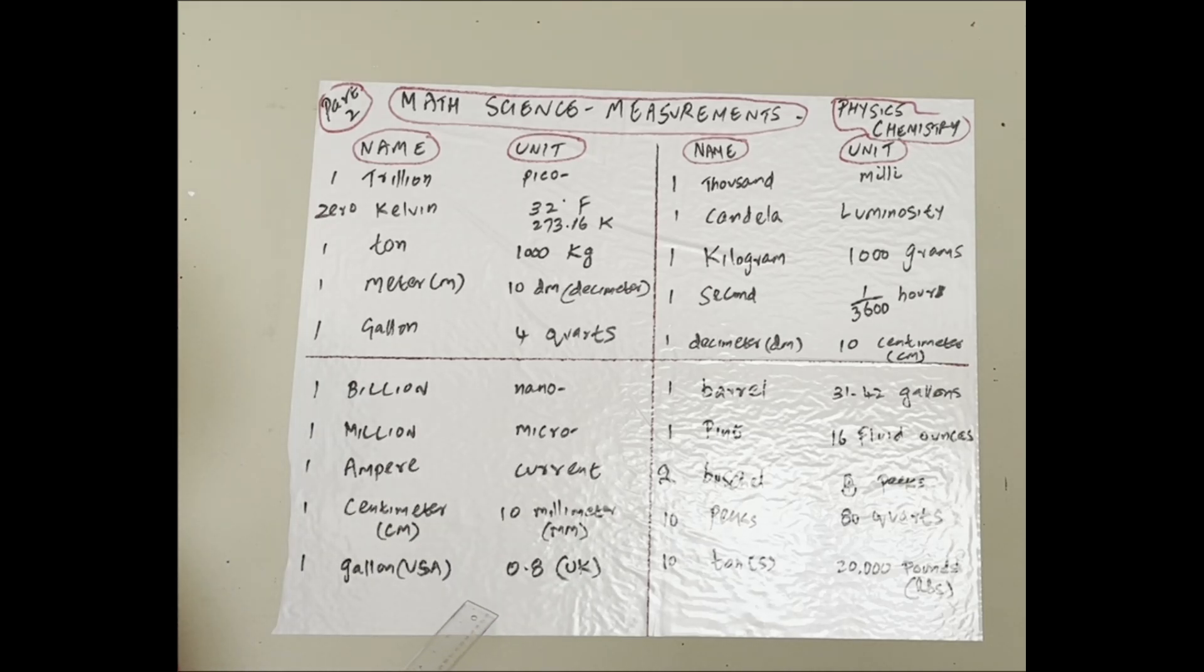One ampere is current, electricity current. One ampere. We say 10 amps, 100 amps when we measure in physics and chemistry. One centimeter: 10 millimeters. One gallon in USA is 0.8 gallon in UK, United Kingdom.